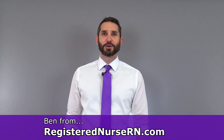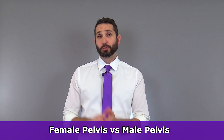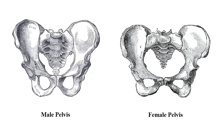Hey everyone, this is Ben with RegisteredNurseRN.com and in this anatomy lesson I want to highlight the key differences between the female pelvis and the male pelvis. And if you were to walk into a crime scene containing skeletal remains, one of the quickest ways to determine the sex of that skeleton would be to examine the pelvis. Now let's take a look at an illustration of a male pelvis here on the left and a female pelvis here on the right to understand some of these key differences.